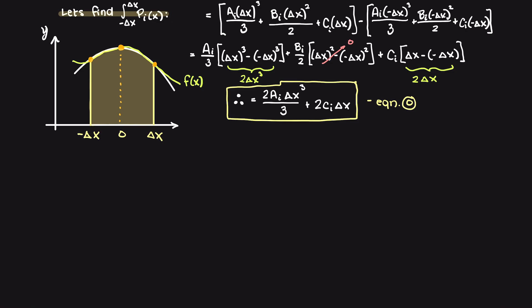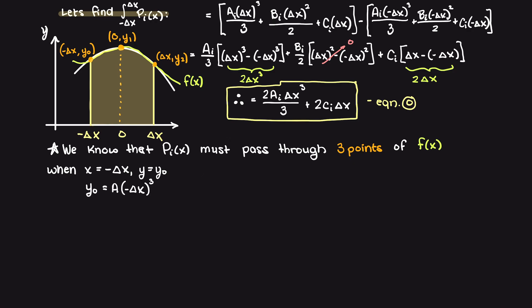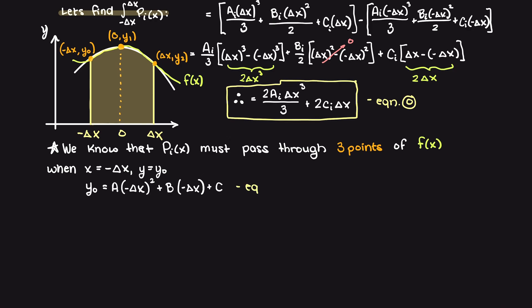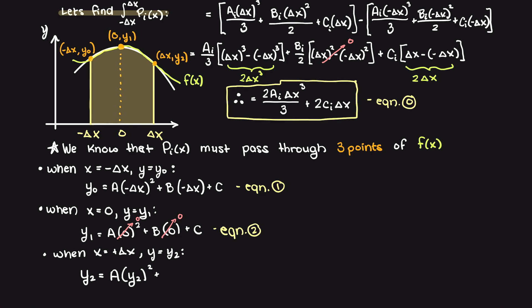We also know that our parabola must pass through three points on our function f of x. The points are shown on our diagram here. Well, from these three known points, we can evaluate our general second order polynomial equation at these known points. And this gives us the following three equations.